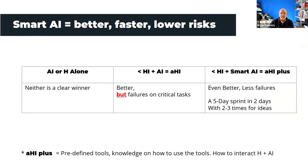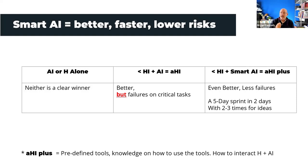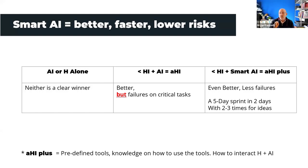Looking at creativity and innovation, AI or human beings alone — there's not a clear winner. But when you combine human intelligence with AI, you get better and quicker results, though with failures on critical tasks. If you think about AI differently — using predefined tools, knowledge of how to use them, and training on how to interact — you get even better results with fewer failures. We now run design sprints in two days that used to take five, generating two to three times more ideas.